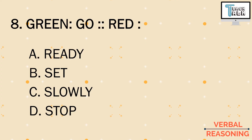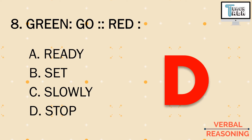Number eight: green is to go, red is to blank. This is about the colors of the traffic light. When it's green, we go — we move forward. But when it's red, the answer is letter d) stop. We stop the car when the traffic light is red.